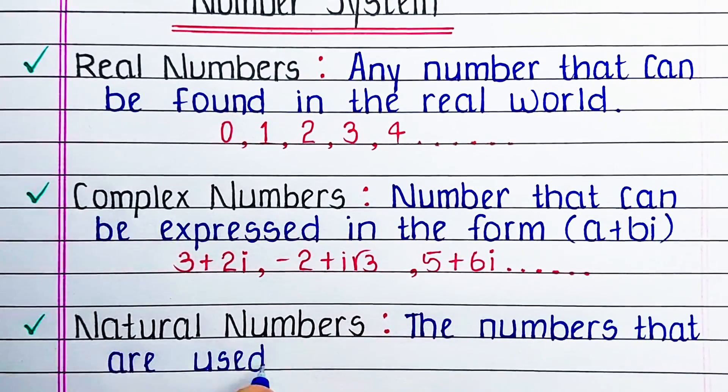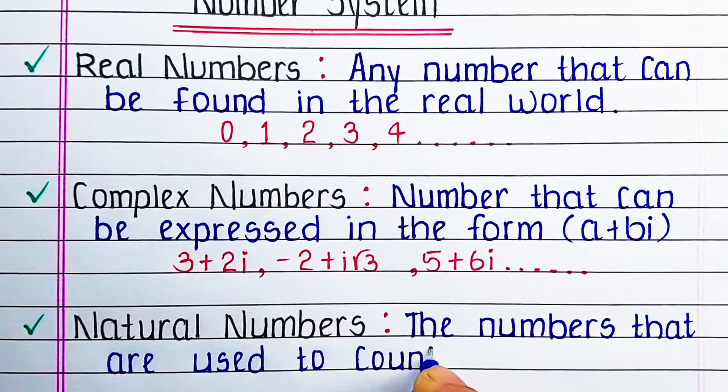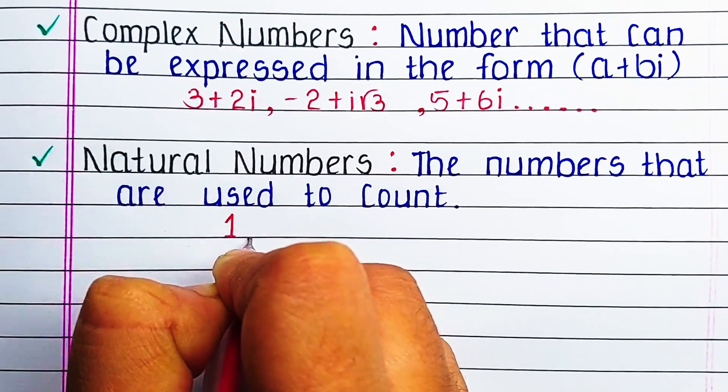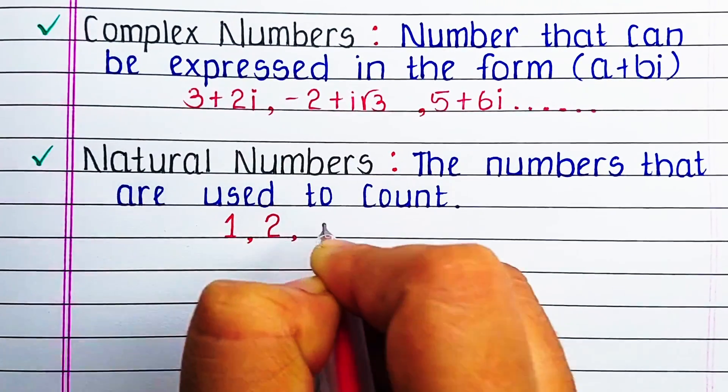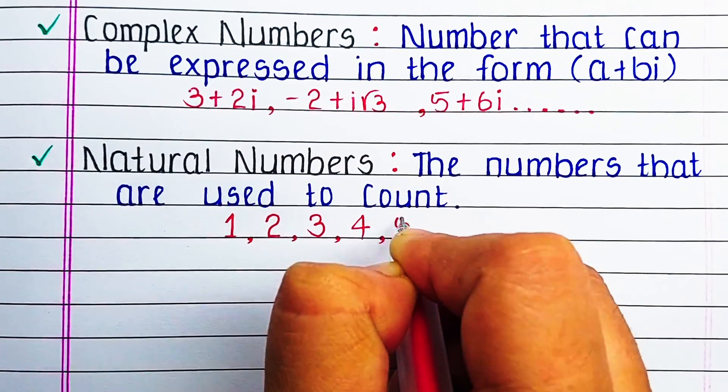Next is natural numbers. The numbers that are used to count are known as natural numbers. For example, 1, 2, 3, 4, 5 and so on.